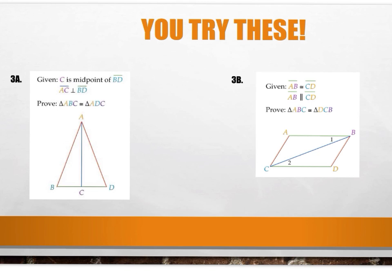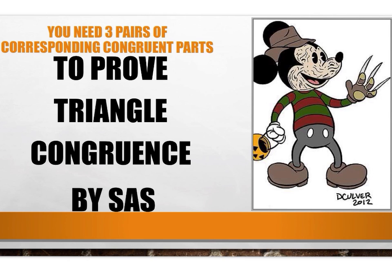There are two proofs for you to try on your own — we'll check them in class. Pause the video and take time to try both. You can use any style: flowchart proof, paragraph proof, or two-column proof. Good luck. This concludes lesson 5.3. Remember, all you need is three pairs of corresponding congruent parts to prove triangle congruence by side-angle-side.